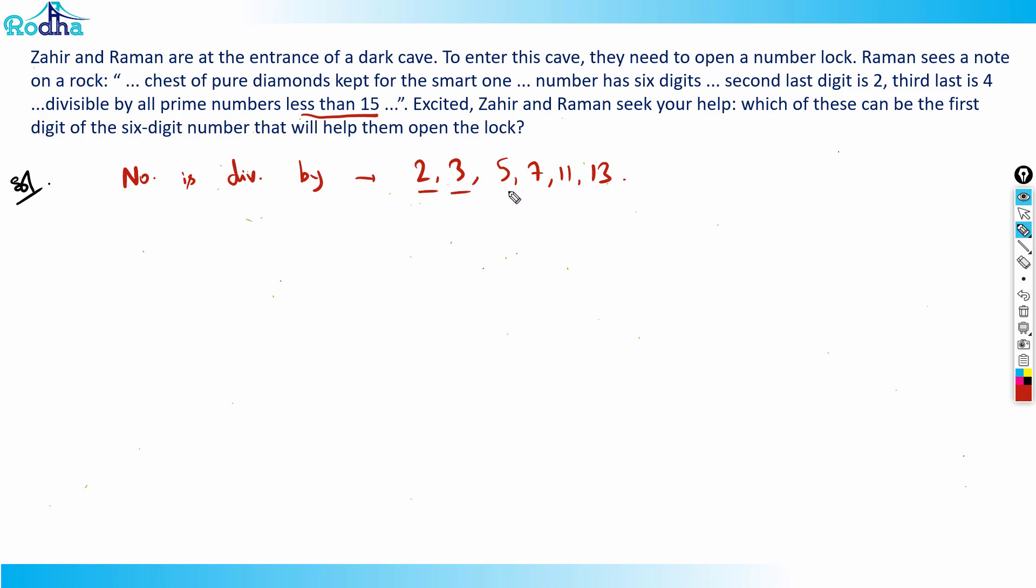Because all these are co-prime with each other, nothing in common because all are prime numbers, I can say that the number should be divisible by 2 into 3, divisible by 2 into 3 as well as 5, that means into 5, and likewise into 7, into 11, into 13.